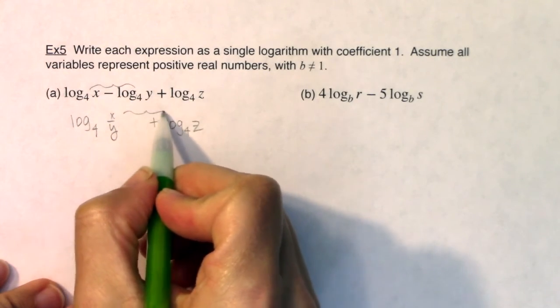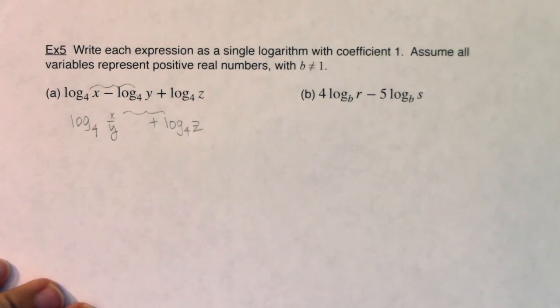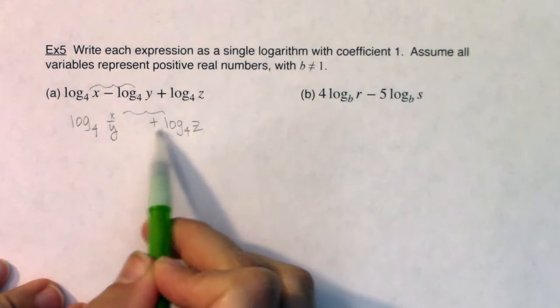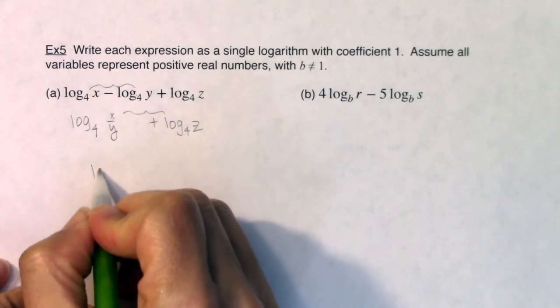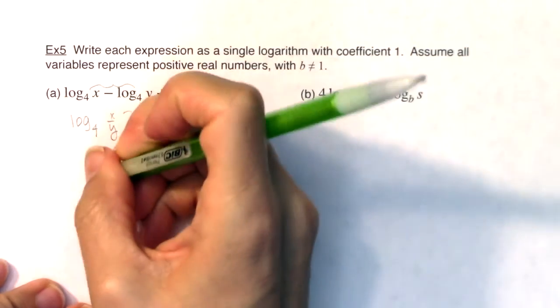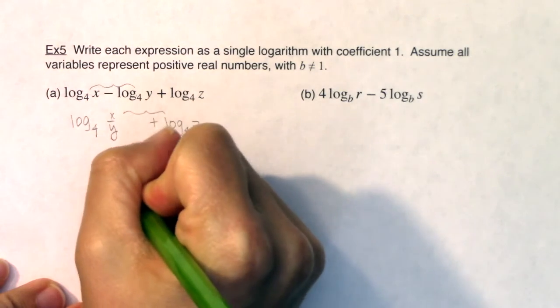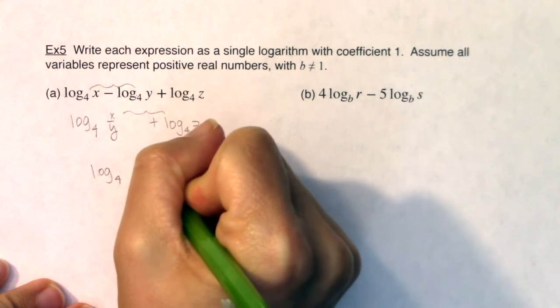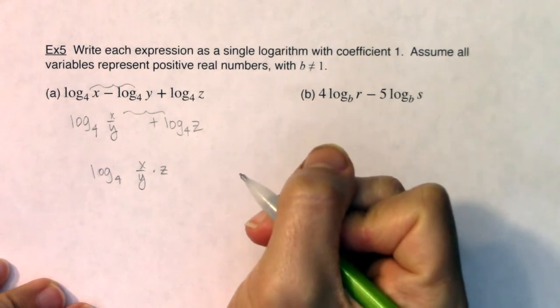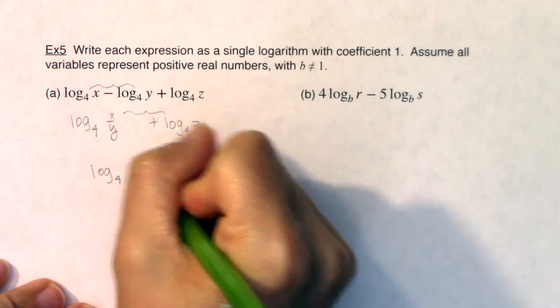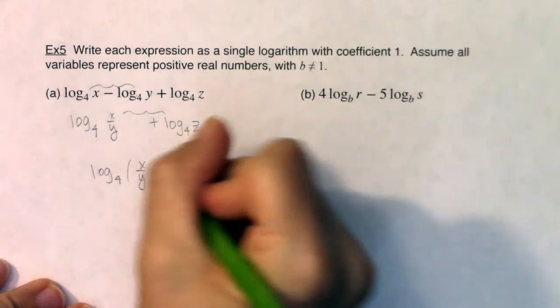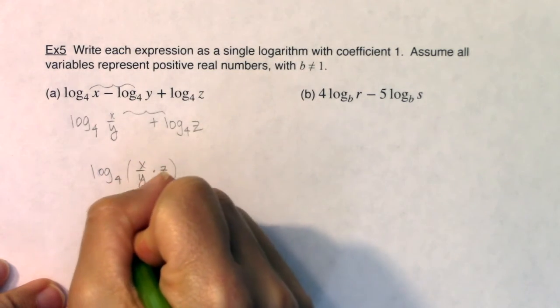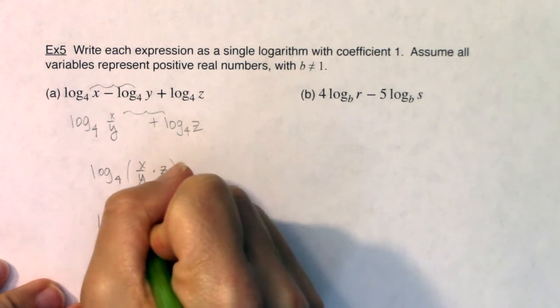And we have a different logarithm rule, the product rule, which says if you have two separate logarithms being added together, I can combine them into one single logarithm by multiplying the arguments. So I would have x over y times z, and when we go to multiply that z into that fraction, keep in mind that's z over one. I'm going to multiply numerators, multiply denominators, and I'm looking at log base four of xz over y.